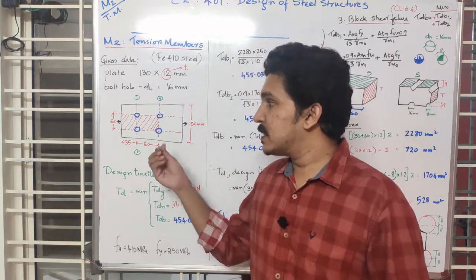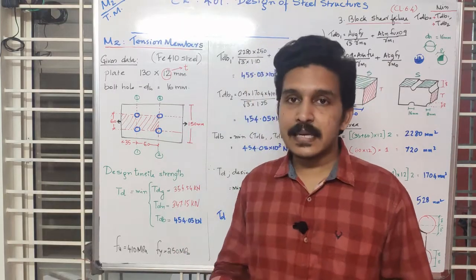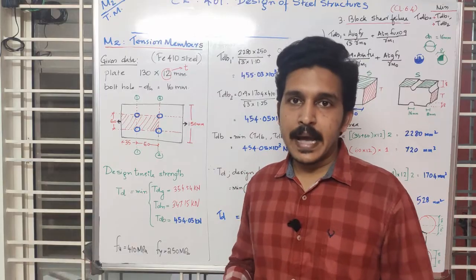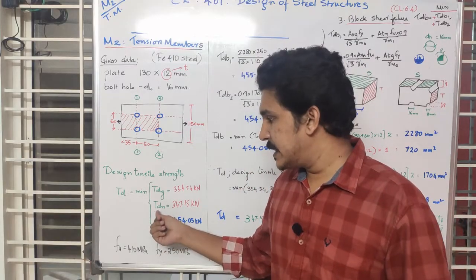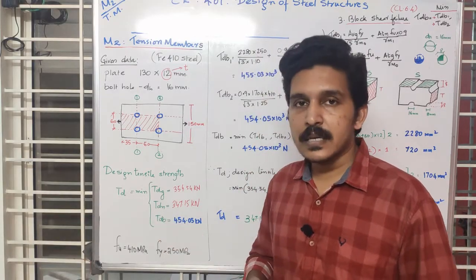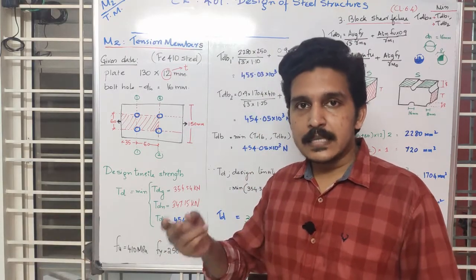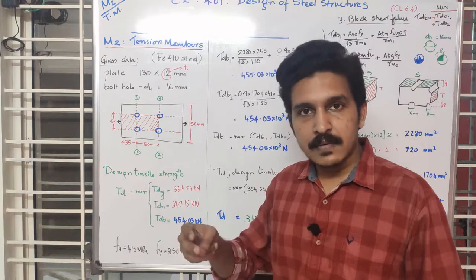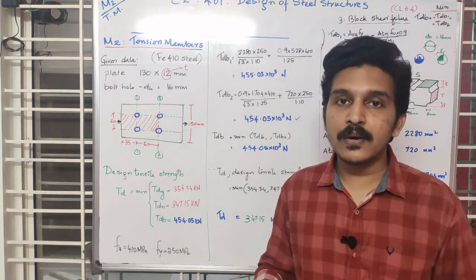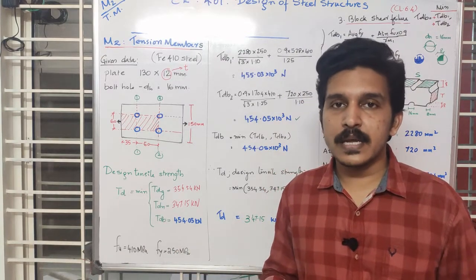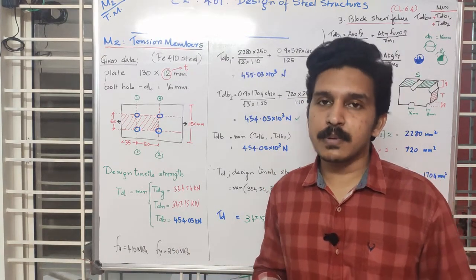This was a plate section example. For angle sections, there is a different equation for TDN, called TDA (rapture for angle). In the next video, we will discuss the angle section type of question with its specific equations.